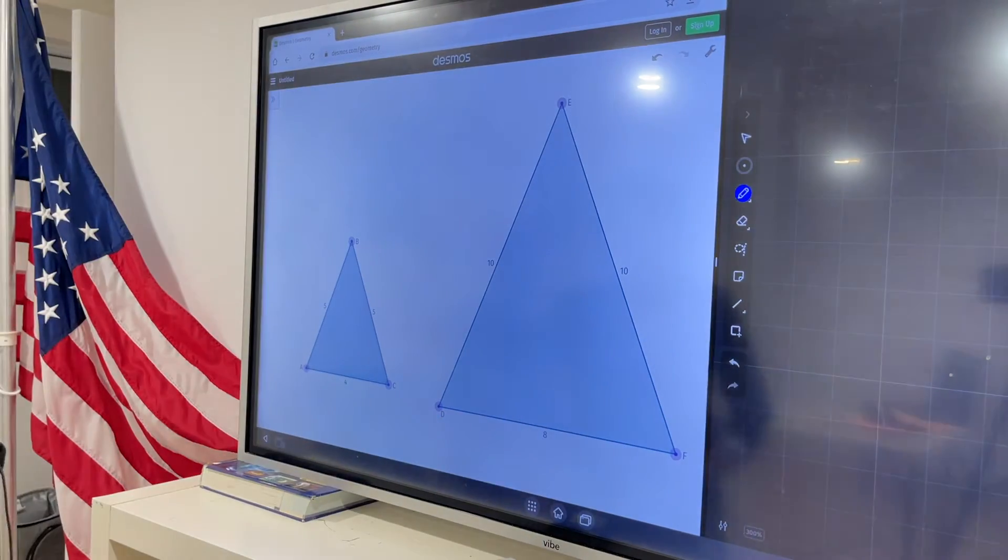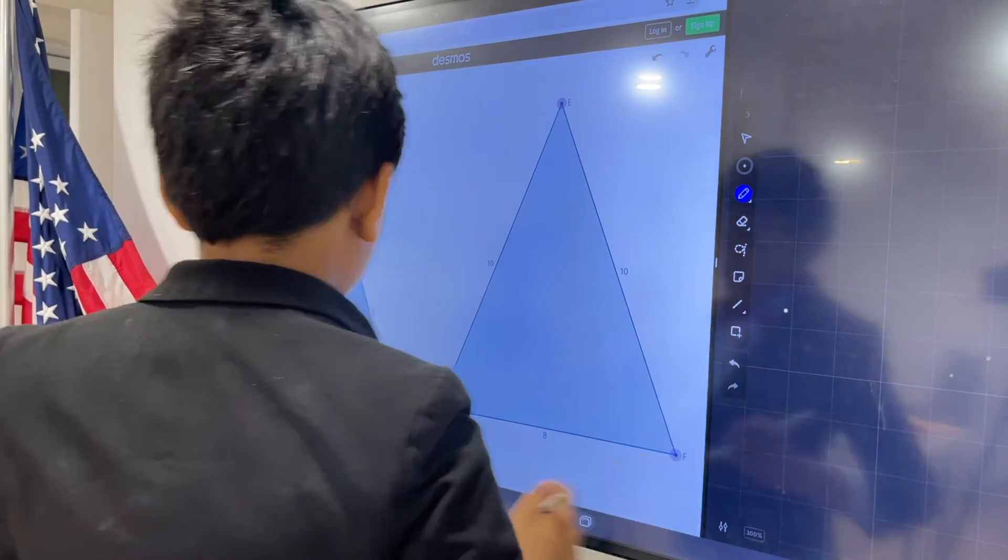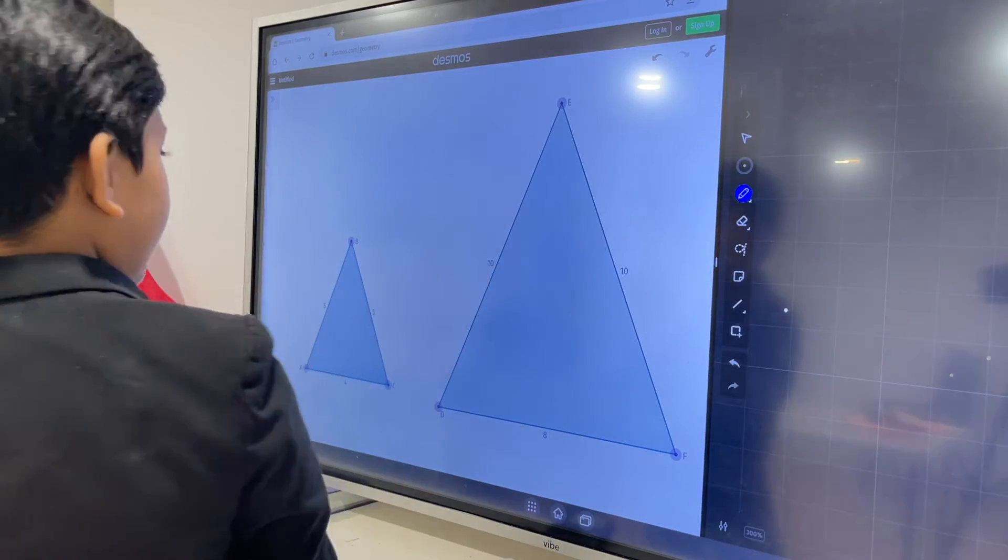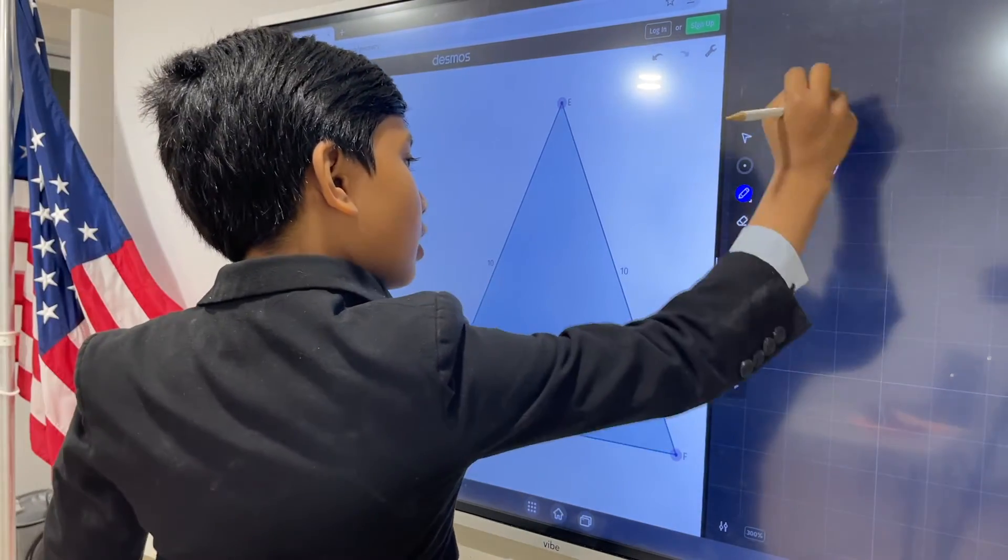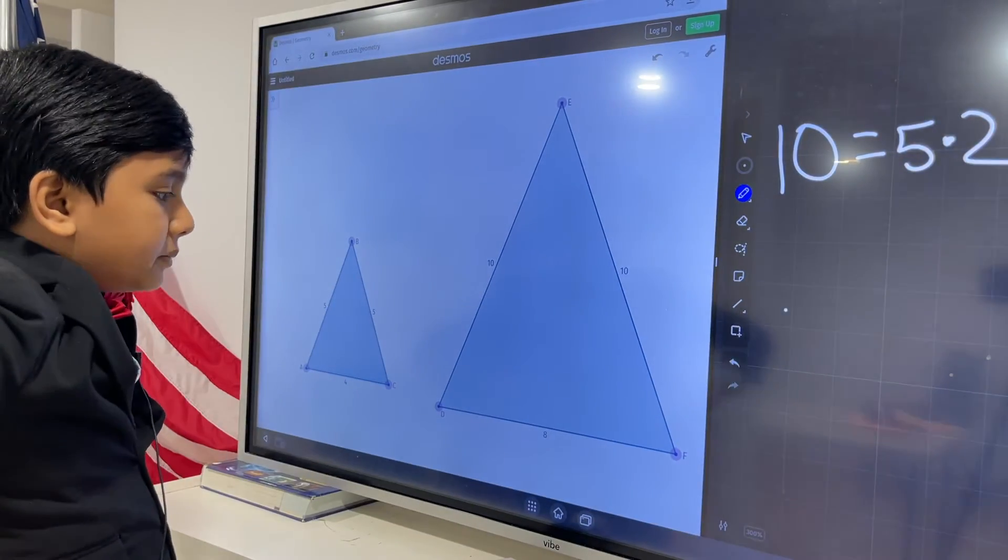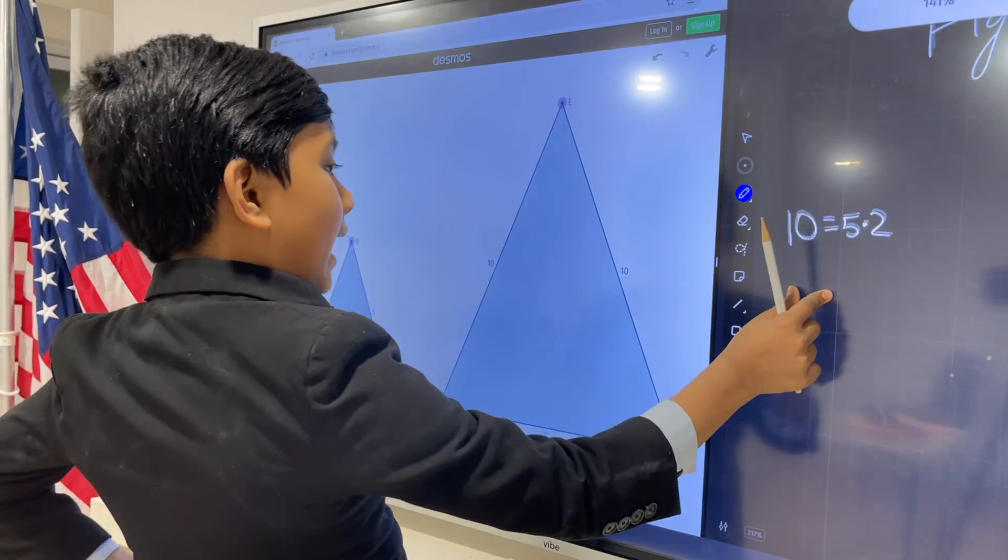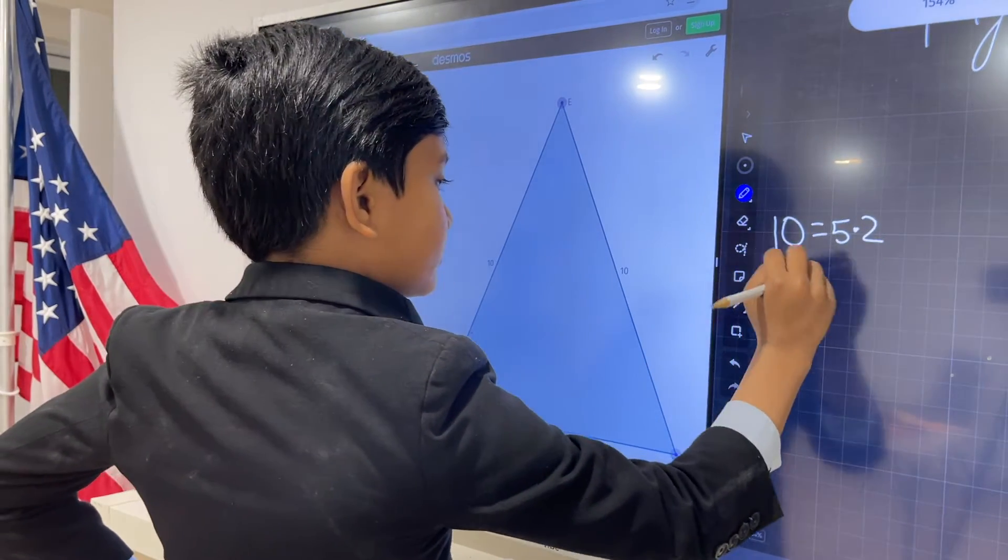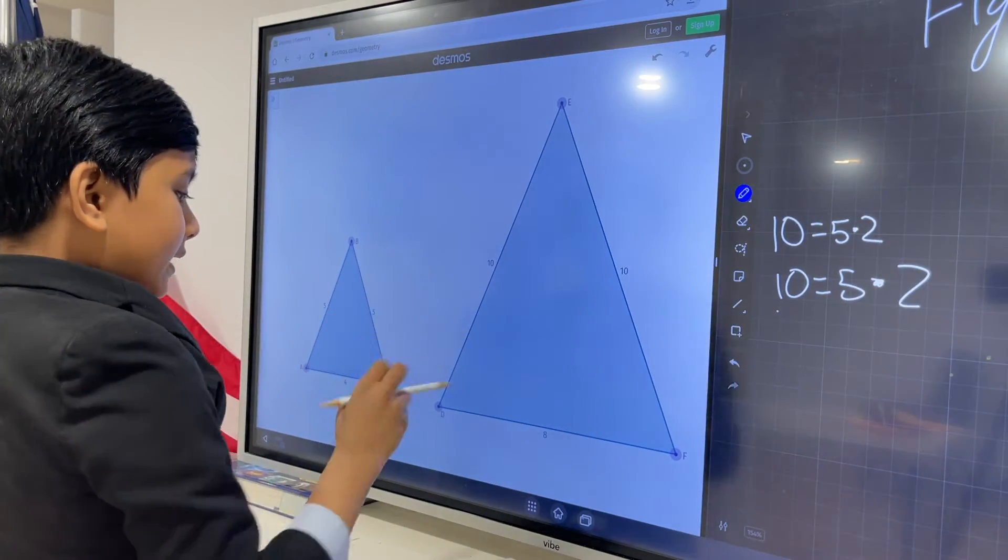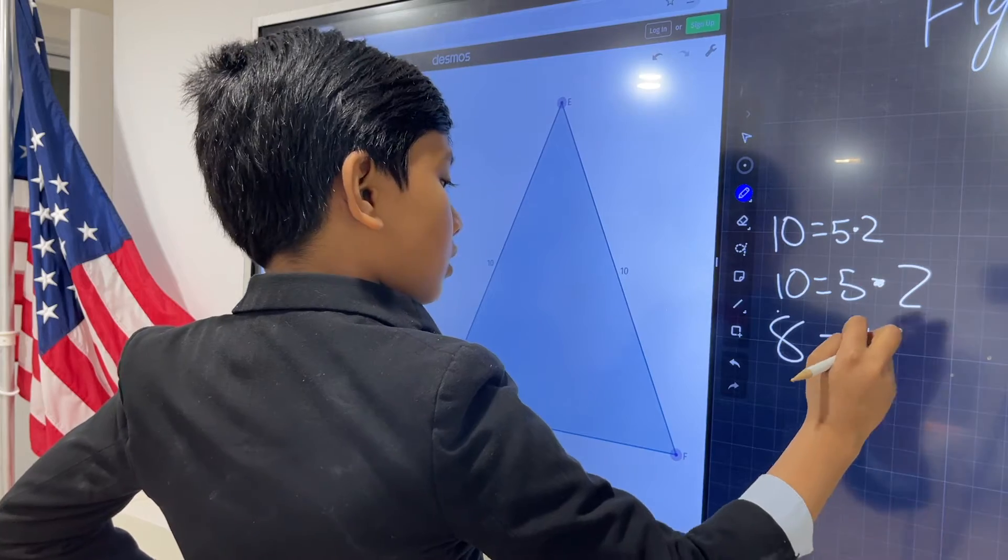So now if you are pretty observant, you should notice something. You should notice that since we have ten over here, ten is obviously five times two, which might just be a coincidence. But why is the other side ten as well? And what's even weirder is that the last side, eight, is four times two.